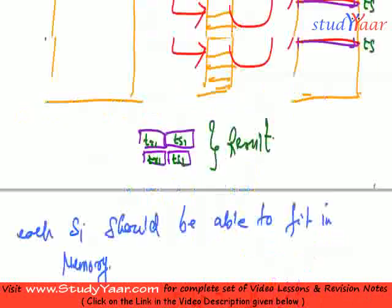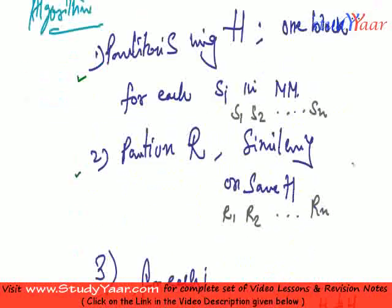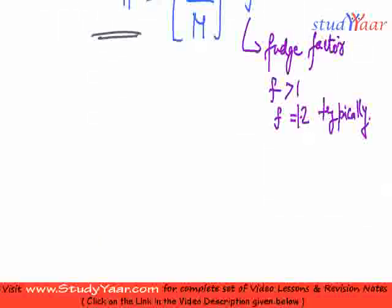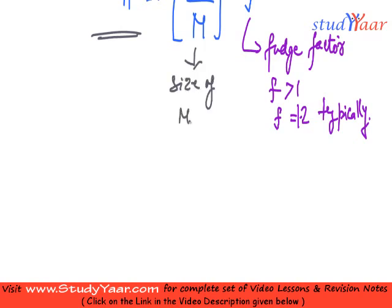Now just realize what I'm saying is I want one block for each SI in main memory. So if I have N partitions, my main memory should be - this is the size of main memory, the number of blocks in main memory.